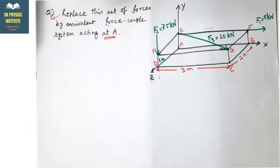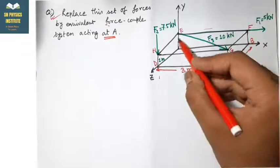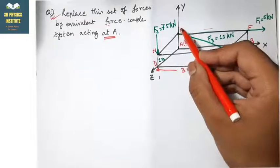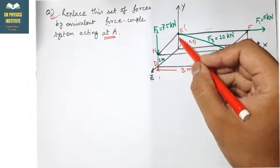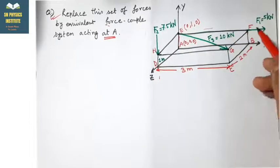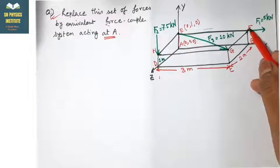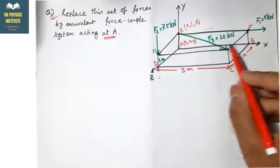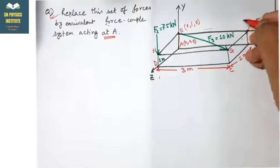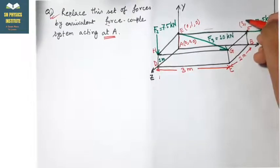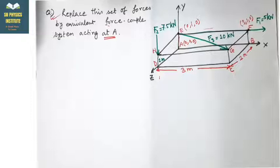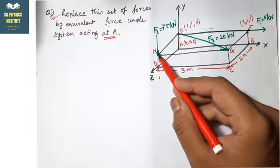First, we note down the coordinates. Point A is at (0, 0, 0). Point E is situated only along the Y axis at height one meter, so E is (0, 1, 0). Point F is situated in the X-Y plane: its X coordinate is 3, Y is 1, and Z is 0, so F is (3, 1, 0).